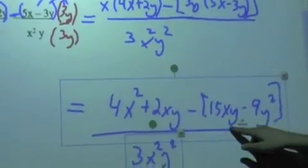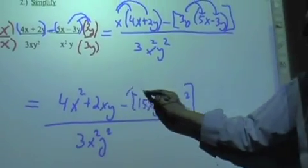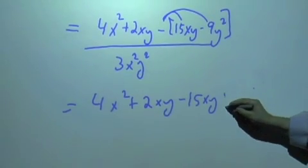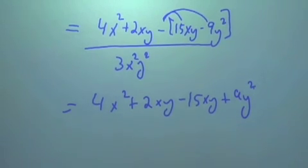Moving right along, our next step is to distribute the negative, right? That's going to change the signs in there. See that? Okay, 15xy + 9y². Now we're going to collect like terms. Are there any like terms?